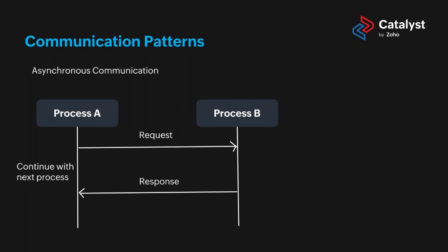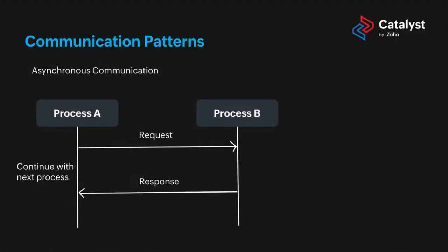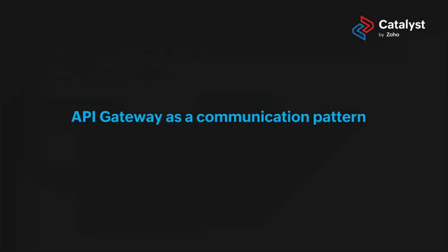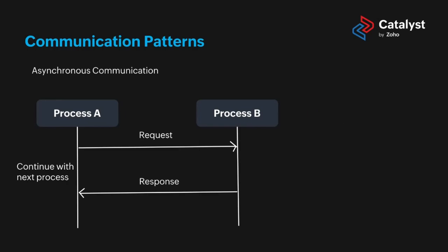If you need a process to happen sequentially and are okay with the waiting times, then synchronous works. But when scaling a system, asynchronous communication works much better. API Gateway is another communication pattern — it's an intermediate layer between your front-end and back-end that adds security, throttling, routing, and other functionalities. All requests to the server are served through the API Gateway. You can combine asynchronous communication with API Gateway as one of the go-tos for your application.